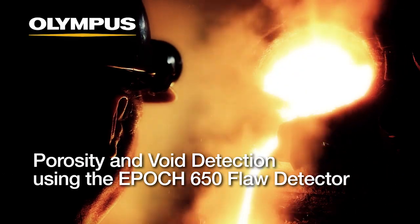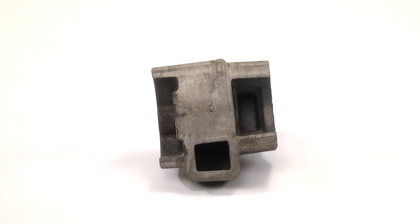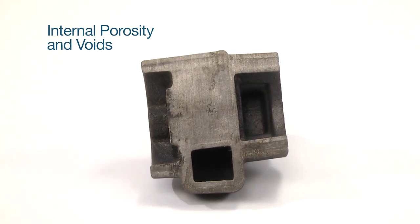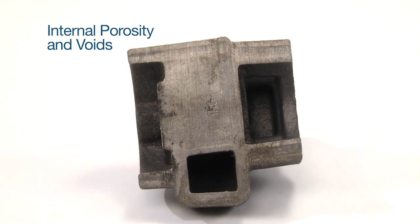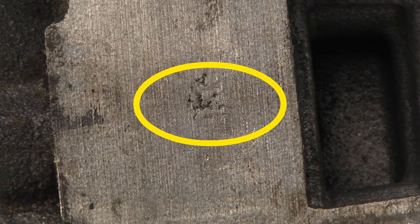This first example will cover porosity and void detection using the EPIC 650 flaw detector. It's common for internal porosity and voids to occur in more central locations within a cast part. This is where it takes longest for the metal to cool with respect to the outer edges.